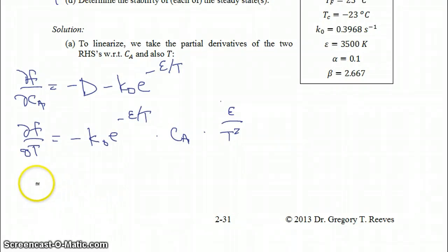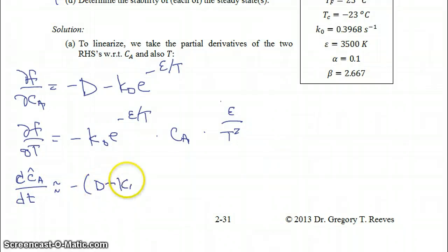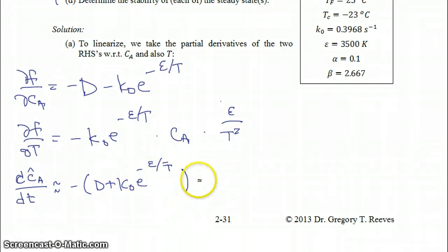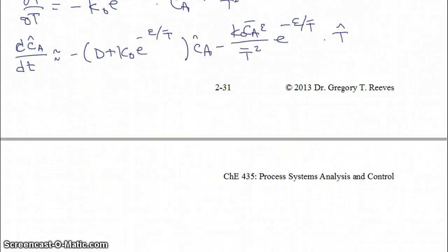Putting those two things together, the time derivative of the concentration of A is approximately equal to minus D plus K0·e^(−ε/T̄) times Ĉ_A, minus K0·C_A_bar·(ε/T̄²)·e^(−ε/T̄) times T̂.